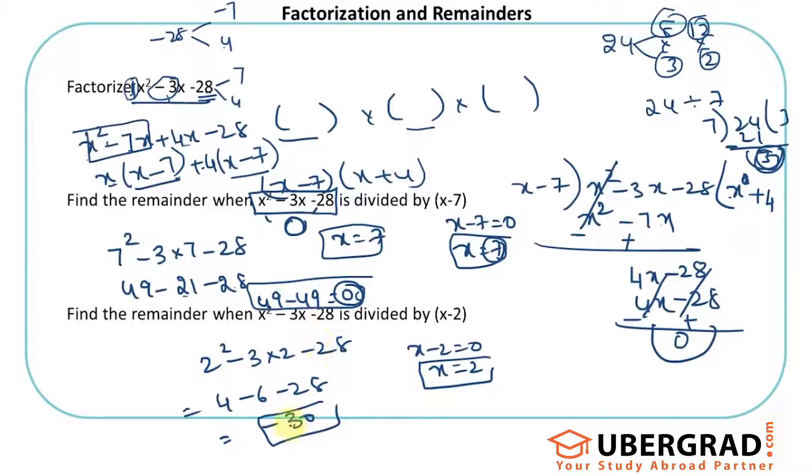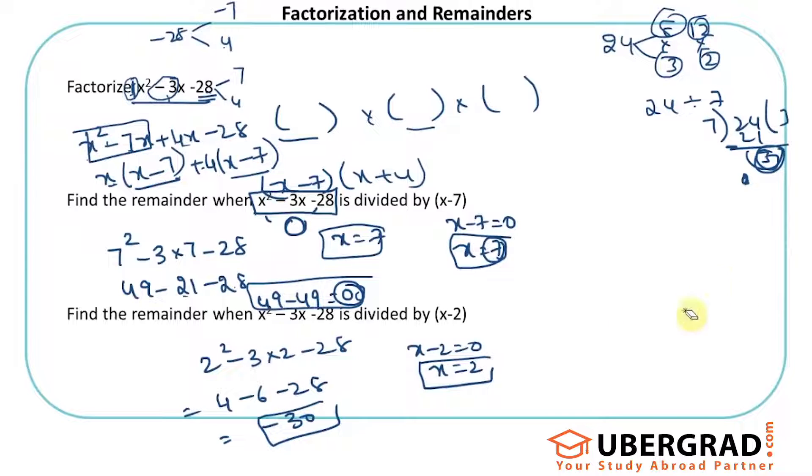Let me just do this division to show that's the correct remainder using the normal division method. x - 2 into x² - 3x - 28. I'll first divide with x to get x² - 2x. They get cancelled out, plus 2x - x = -x - 28.